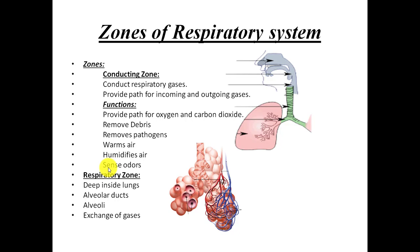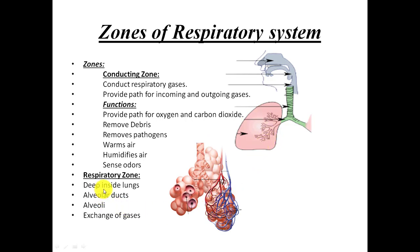The respiratory zone is present deep inside the lungs. Inside the lungs we have millions of alveoli, and these alveoli are the actual respiratory zone. Inside the alveoli, gaseous exchange occurs between the alveoli and the blood: carbon dioxide diffuses from the blood into the alveoli, and oxygen diffuses from the alveoli into the blood.